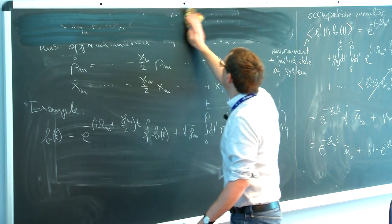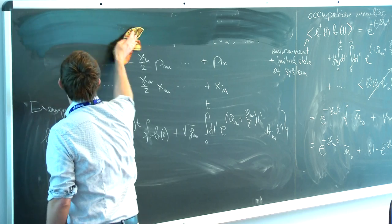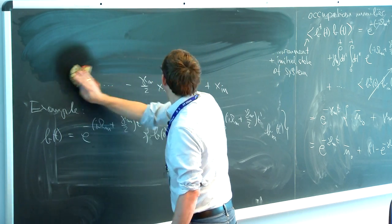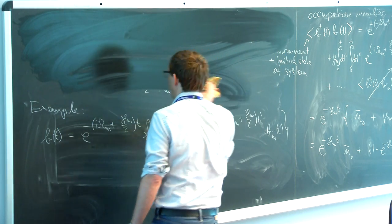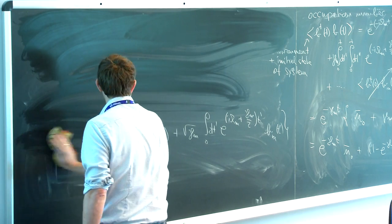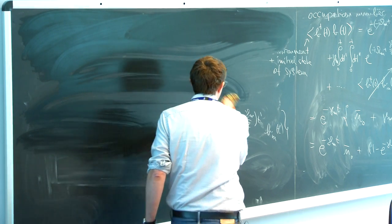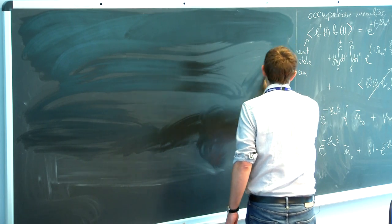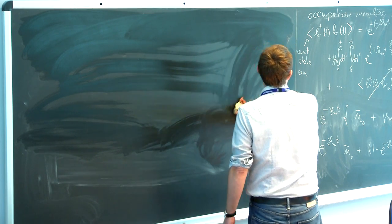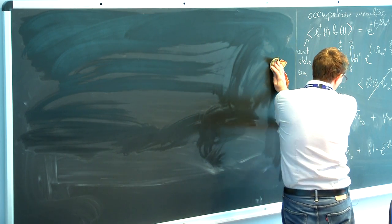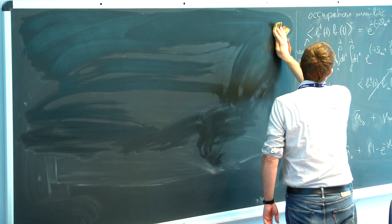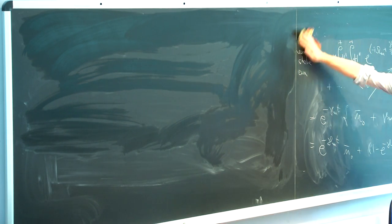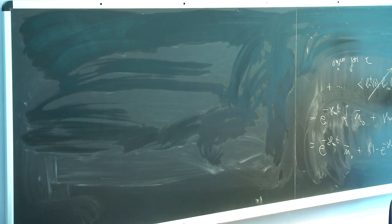So if we would have initially started with an arbitrary level of the fluctuating force, this calculation would ultimately tie this arbitrary level to the thermal occupation number in thermal equilibrium.